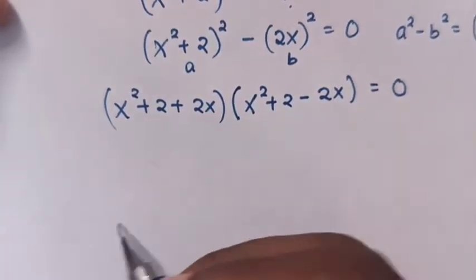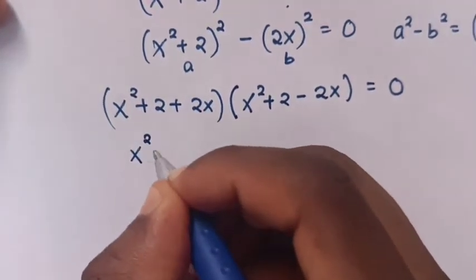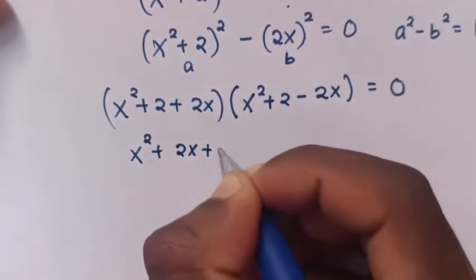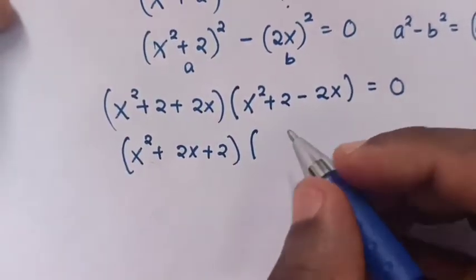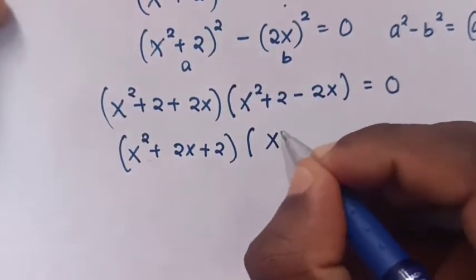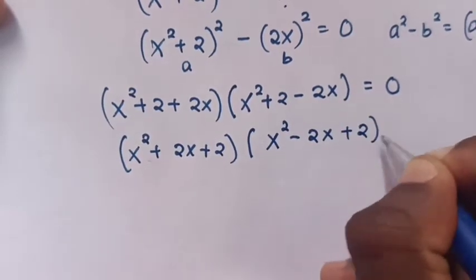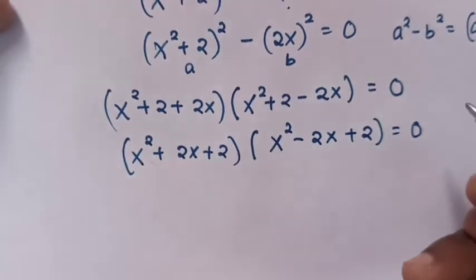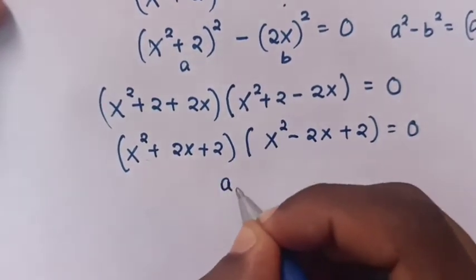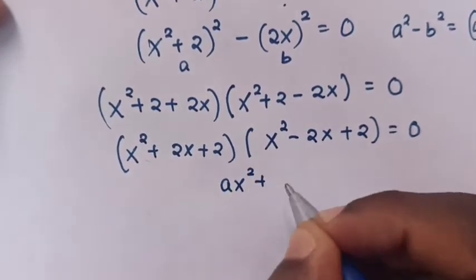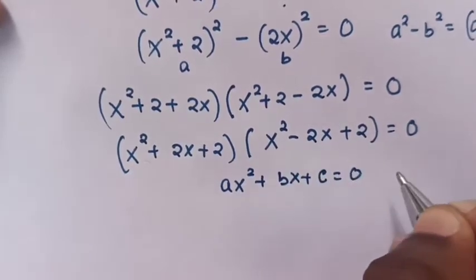This is a quadratic equation. It will be x² + 2x + 2 equals 0. Now this is in the form of a quadratic equation: x² + Bx + C = 0.